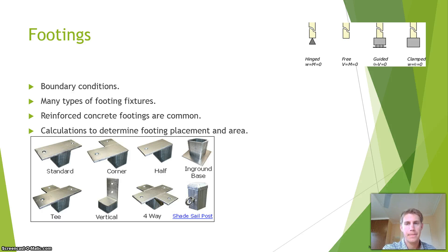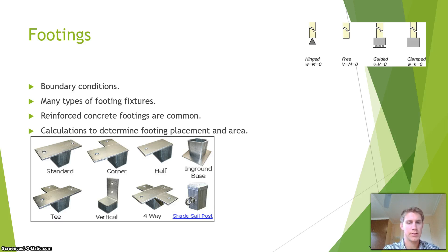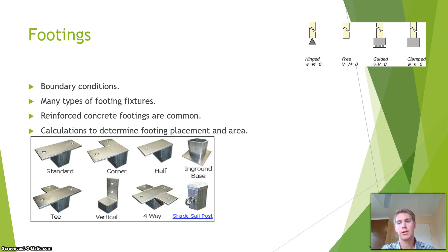So your footings. The boundary conditions are hinge, free, guided, and clamped. There are many types of footings and fixtures — standard corner, half, in-ground bases, etc. Most footings today are reinforced concrete footings, which may have U-bolts moulded into the concrete. There are also calculations to determine the footing placement and the areas needed. A strong footing will allow for a safer structure.